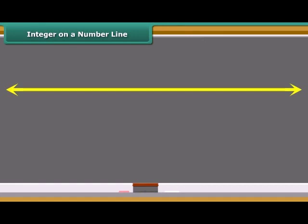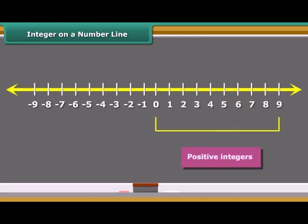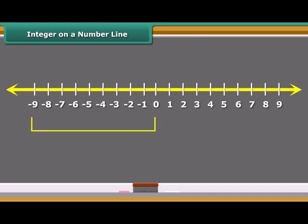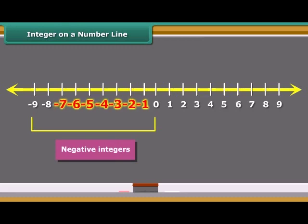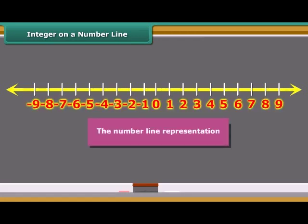This figure represents a line marked with some points at equal distance. A point on it is marked as zero. Points to the right of zero are positive integers. Points to the left of zero are negative integers and are marked minus 1, minus 2, minus 3, and so on. This type of representation of integers is called the number line representation.